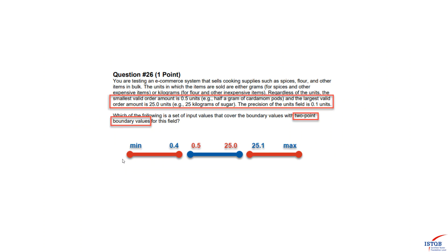We can define three equivalence classes based on the description. We know that 0.5 to 25.0 are the smallest and largest values for the valid equivalence class, and those values are included in the partition. Based on the valid values we can easily define the invalid classes: 0.4 and below, and 25.1 and above — both values are included in the partitions, giving us two invalid classes in total.